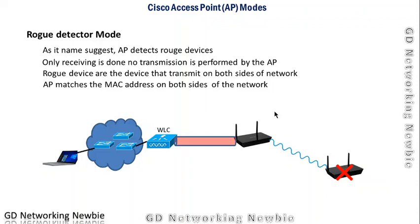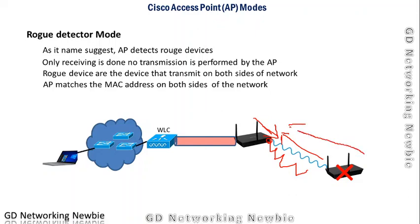In rogue detector mode, the access point detects rogue devices. Only reception is performed — no transmission. The AP sits idle and listens for wireless signals. It can detect rogue devices by matching MAC addresses on both the wireless and wired sides; if there is a match, the rogue device is identified. Detection policies and definitions are configured on the access point for this purpose.